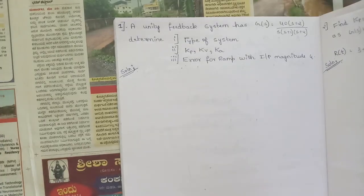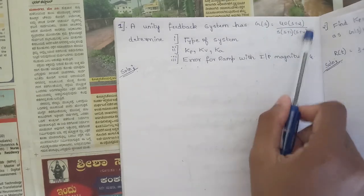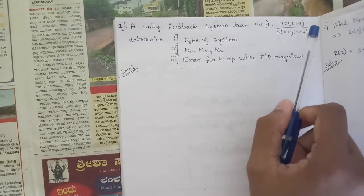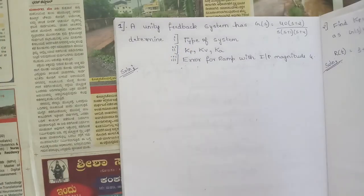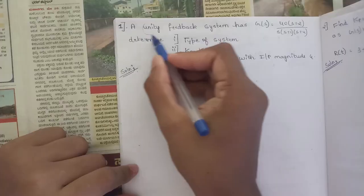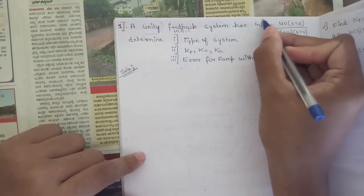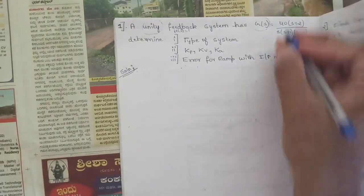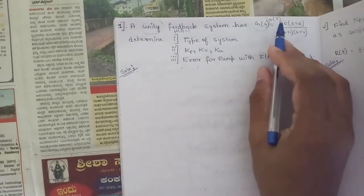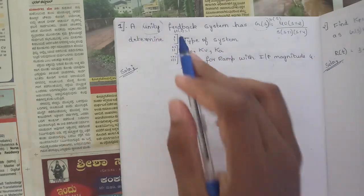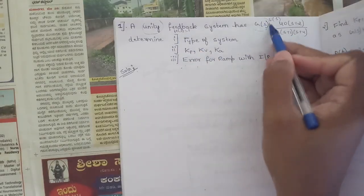Here is the first question: a unity feedback system has G(s) equal to 40 times (s+2) divided by s times (s+1) times (s+4). We need to determine the type of system. Since it is a unity feedback system, H(s) equals 1, so the open-loop transfer function G(s)·H(s) simplifies to just G(s).